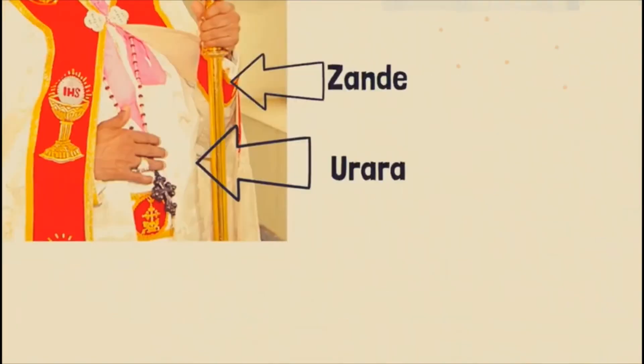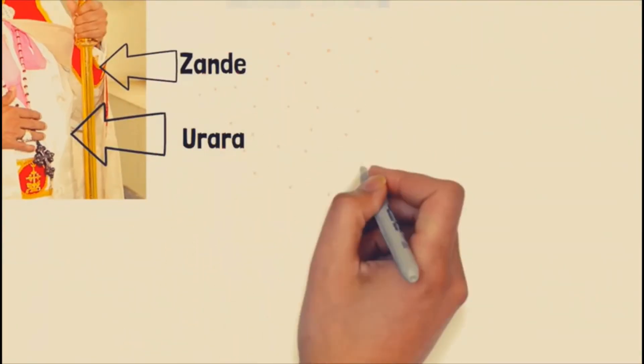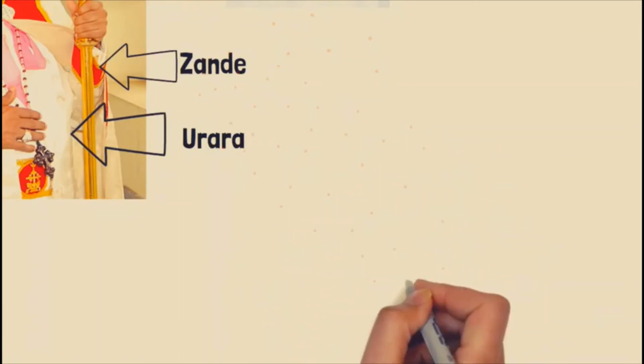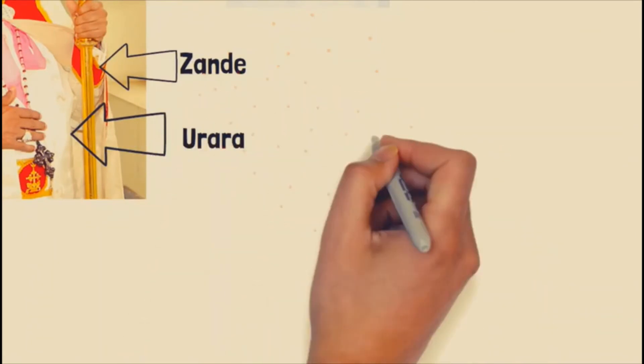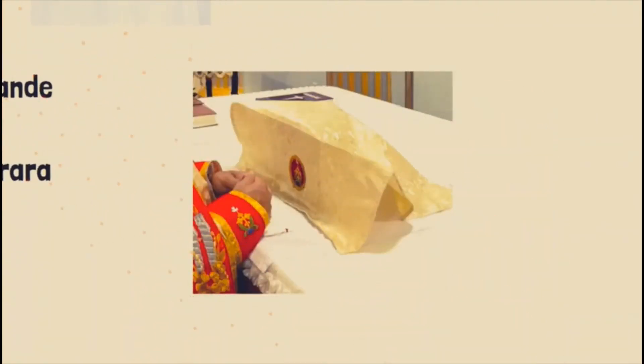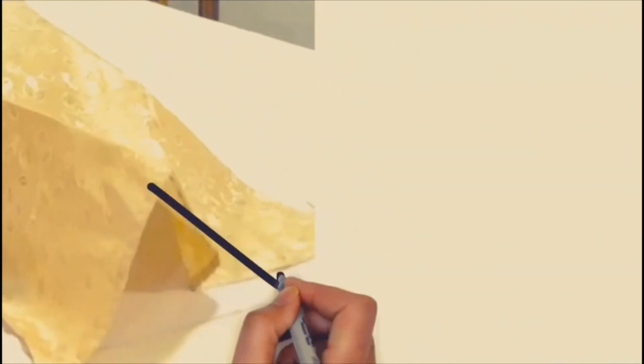Shoshapa. This is a square sacred veil made with the same color as that of Paina. The act of covering the sacred mysteries with Shoshapa during the Holy Qurbana signifies the burial of Christ in the tomb.